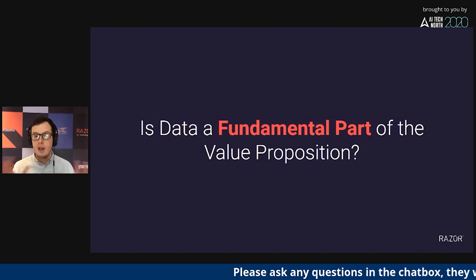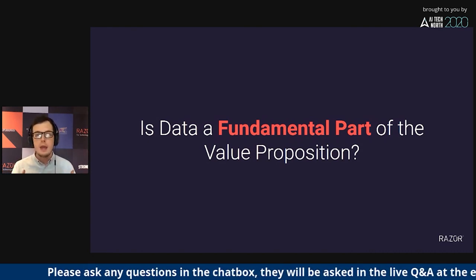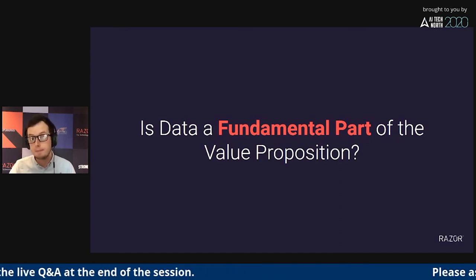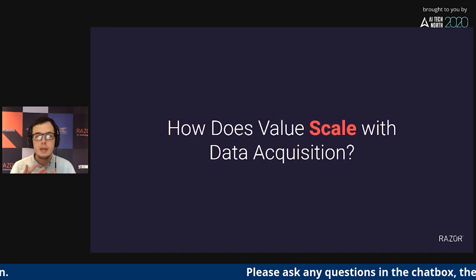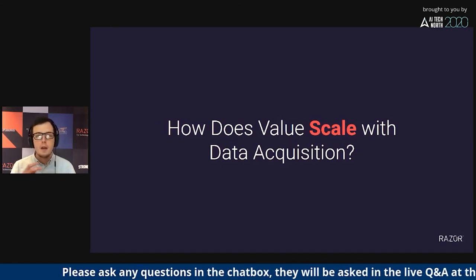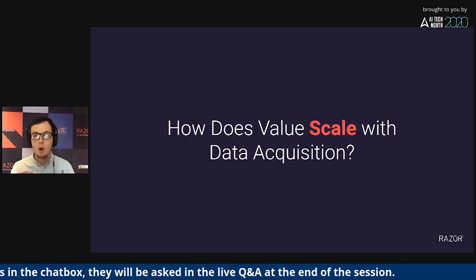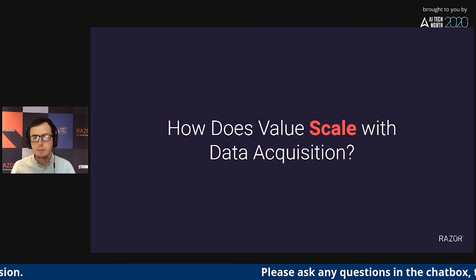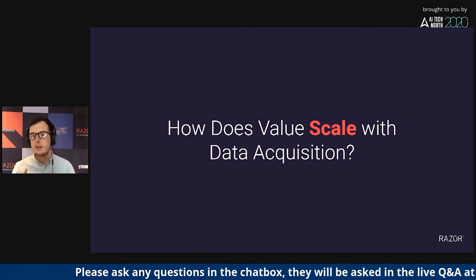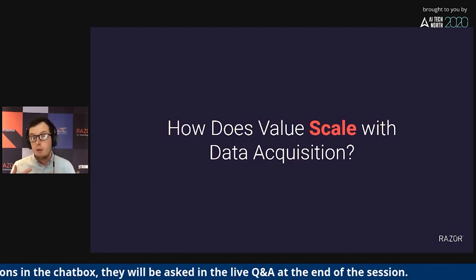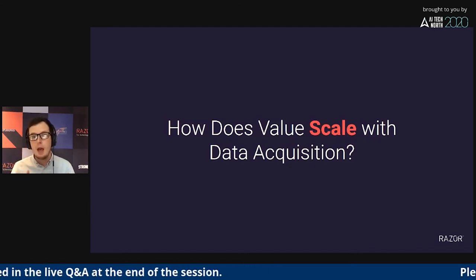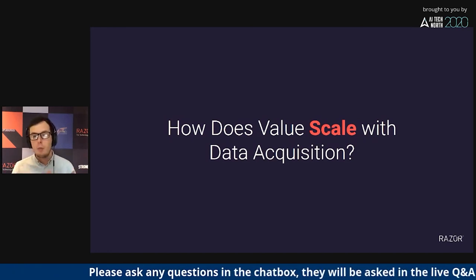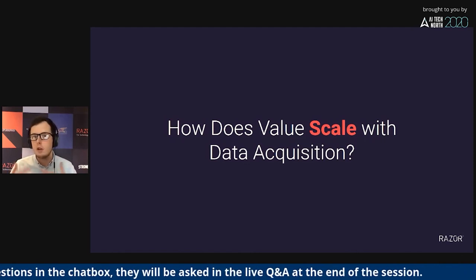How does the value scale with data acquisition? This is where you consider the shape of that curve. The defensive position of a data network can vary dramatically between one that continues to become more and more valuable, regardless of how many data points, to one where that value trails off very quickly. If this is the case, it's very easy for a competitor to come in and close that gap. For example, it would take an awful lot of data to replicate Amazon's AI recommendation system, whereas a thermostat that uses AI to predict when to turn the heating on probably doesn't need as much data to be good enough and is therefore something other people can replicate.